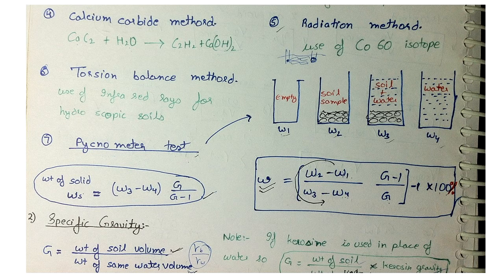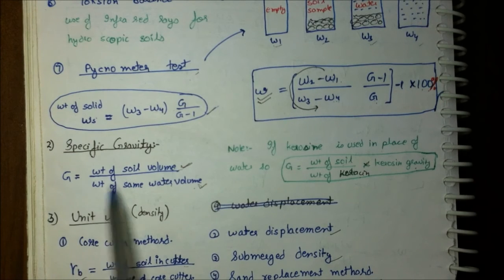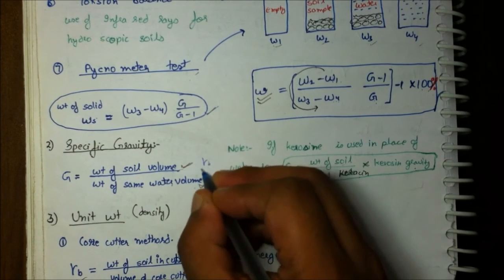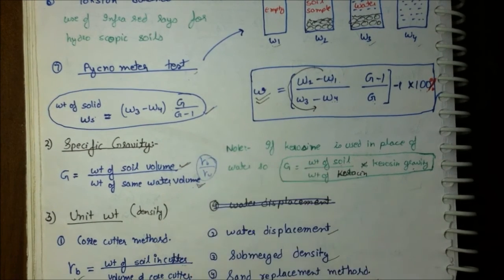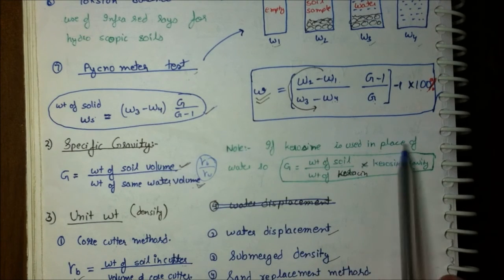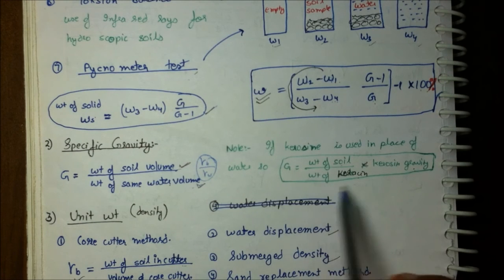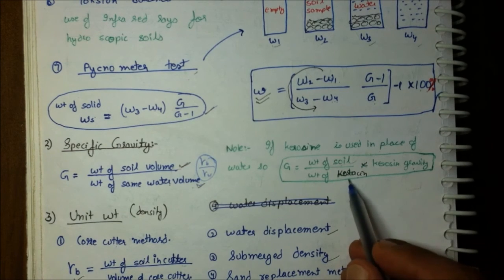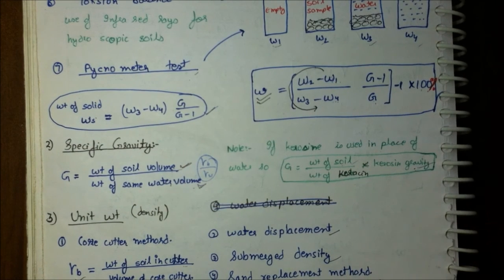The weight of soil solids from the pycnometer test is (W3 minus W4) times G upon (G minus 1). For specific gravity, G equals the weight of a soil volume divided by the weight of the same volume of water, or equivalently gamma_b upon gamma_w. If kerosene is used instead of water in the pycnometer test, then G equals (weight of soil upon weight of kerosene) times specific gravity of kerosene.